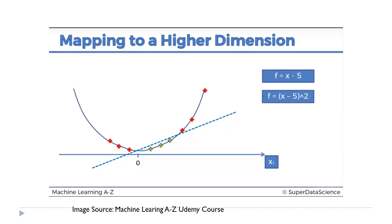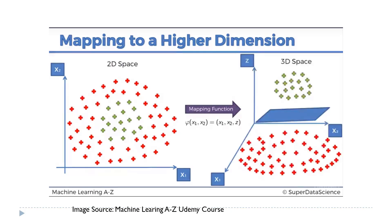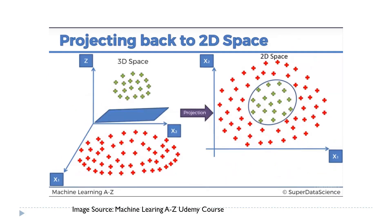After converting the one-dimensional data points to two-dimensional space, we can clearly identify a hyperplane which linearly separates them into two classes. Similarly, to find a hyperplane for two-dimensional data points, we can move those 2D data points to three-dimensional space by applying a mapping function. In that three-dimensional space with dimensions x1, x2, and z, one can identify a hyperplane separating the data into two classes, and we can project back from 3D to 2D to identify the hyperplane.